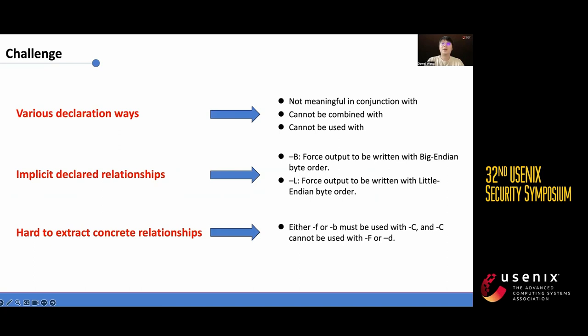the options B and L are defined separately as false output to be written with big or little endian byte order. Although the conflict between B and L is not explicitly stated, it can be inferred by comparing the two sentences which depict two diametrically opposite behaviors.